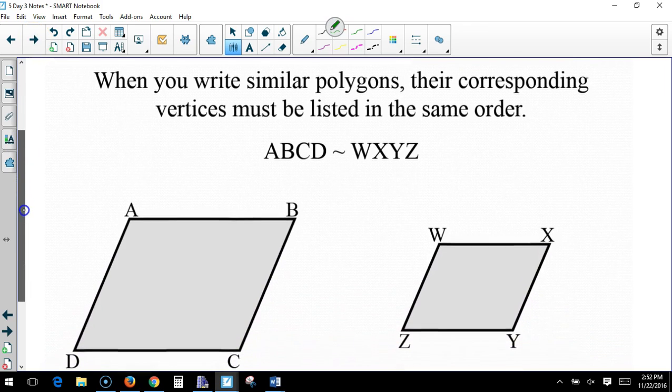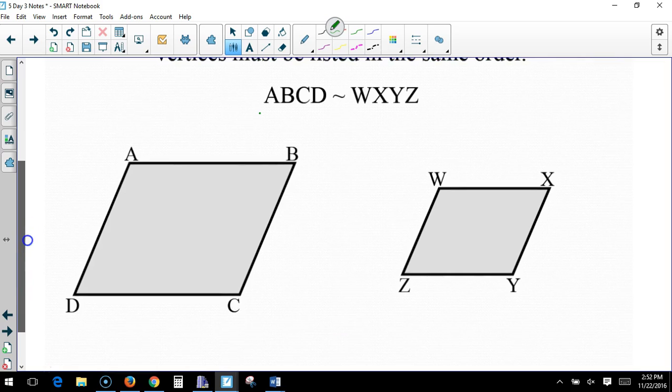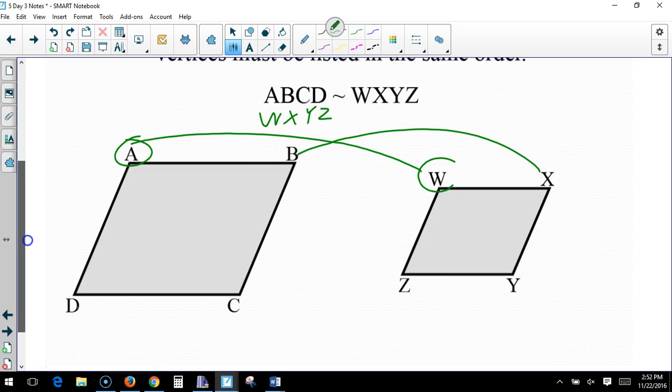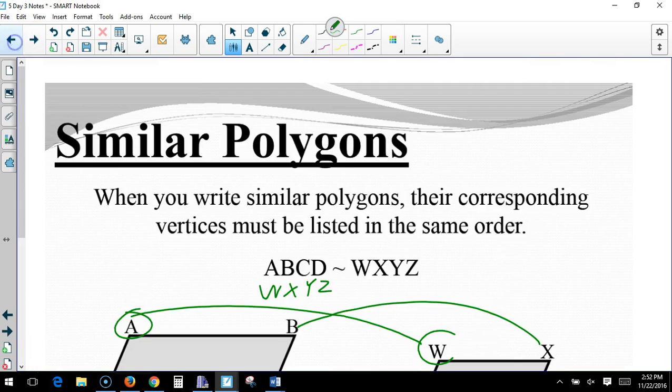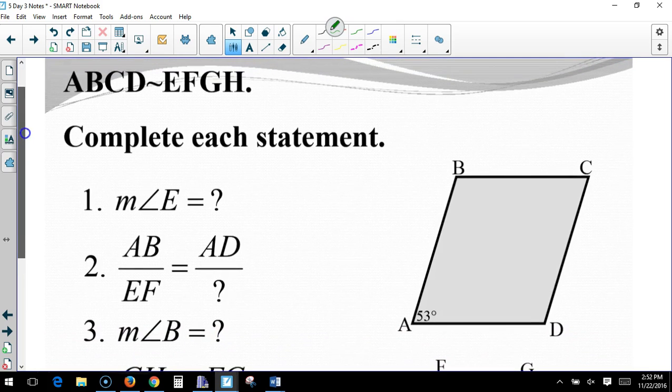When you write similar polygons, their corresponding vertices must be listed in the same order. Which is why we talked about before, you can do this trick. And then, you can see that A corresponds to W. And B corresponds to X. And C corresponds to Y. And D corresponds to Z. That's why we do that little trick. So, ABCDEFGH. Complete each statement. Well, before I do that, I'm going to write underneath. EFGH. Just to make my life easier.